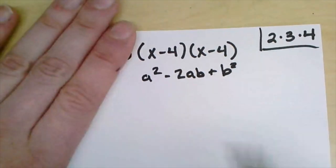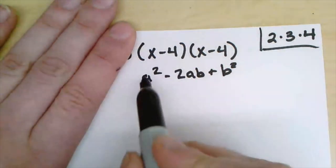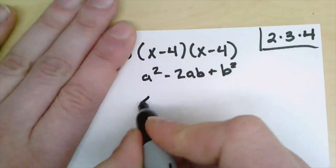Well when I do that, if I'm matching that term, the a term is the x and the b term is the 4. So x squared is going to be x squared.